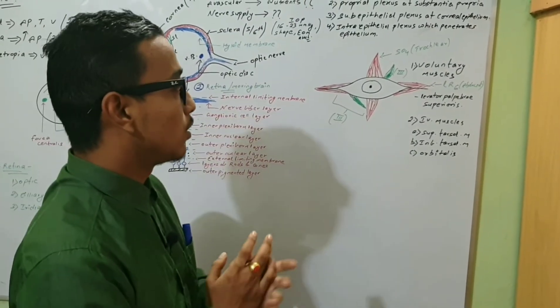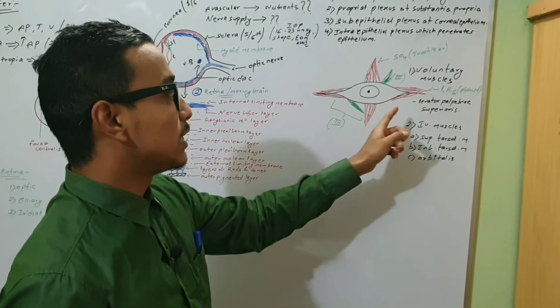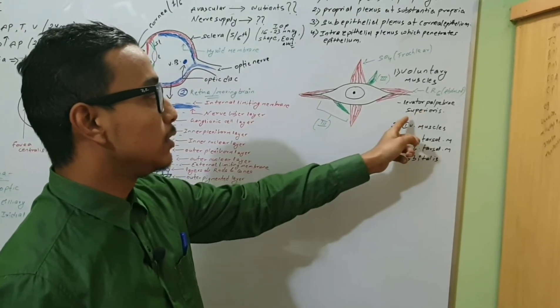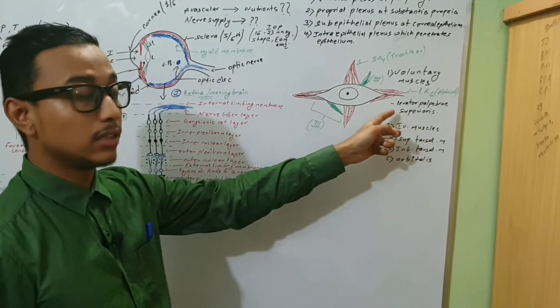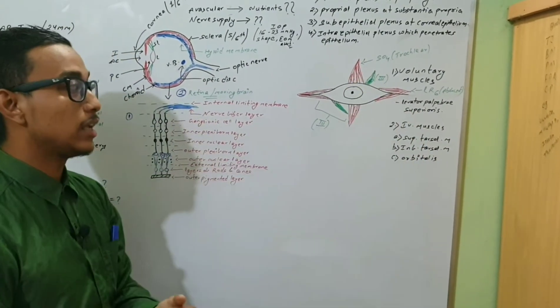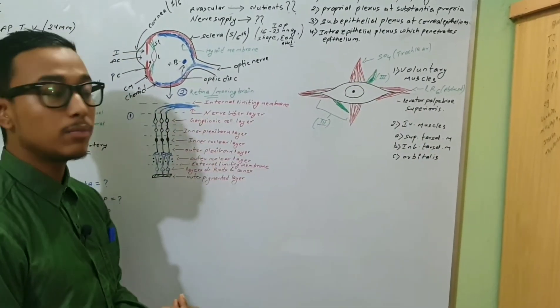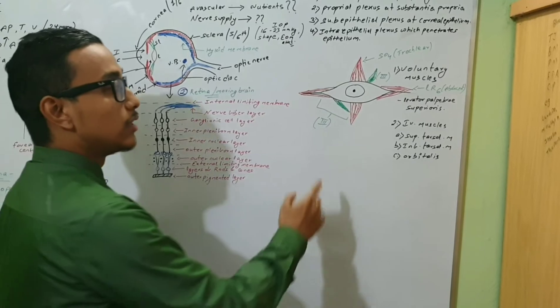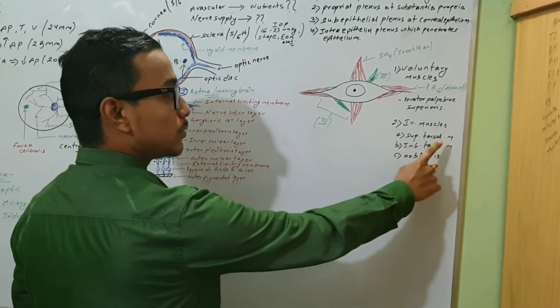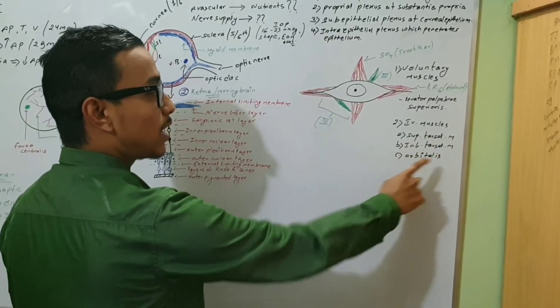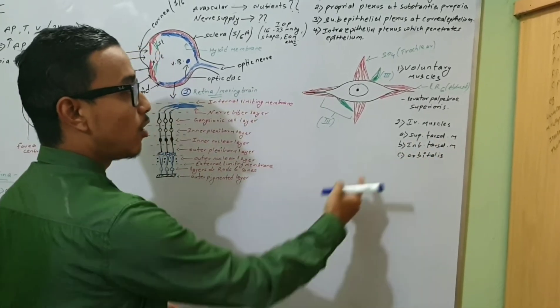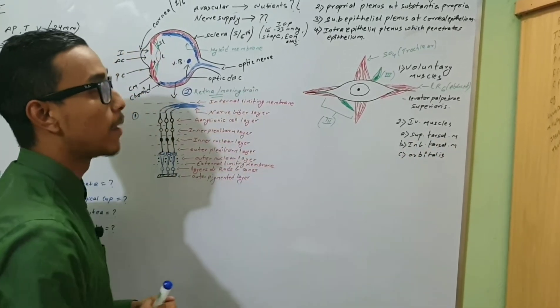The voluntary muscles also include the levator palpebrae superioris. The involuntary muscles include the superior tarsal muscle, inferior tarsal muscle, and orbitalis.